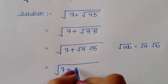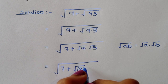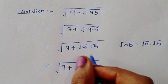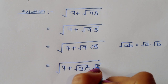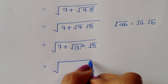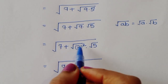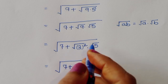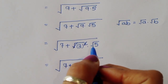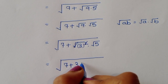Now, square root of 9 can be written as square root of 3 squared, since 3 squared is 9. The square and square root cancel, so we get the term 7 plus 3 times square root of 5.